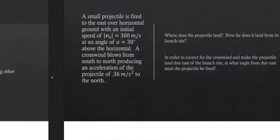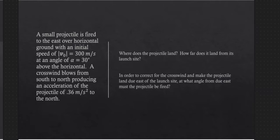The example we're going to work through: we have a small projectile fired to the east over horizontal ground with an initial speed of 300 meters per second at an angle of 30 degrees above the horizontal. Additionally, we have a crosswind blowing from south to north, producing an acceleration of 0.36 meters per second squared to the north. We'd like to know where the projectile lands and how far it traveled from the launch site. Then we'd like to correct for this crosswind — so at what angle from due east must we launch the projectile in order for it to land exactly due east?